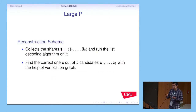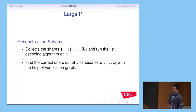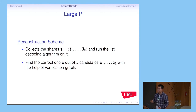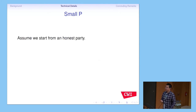There are two settings. First, assume there are many passive parties — P is very large. In this case, we can use the folded Reed-Solomon code to do reconstruction. However, this will output a list of candidates, not just one, but we can ensure the correct one is always in this list. Then, with the help of the verification graph, we can find the correct one out of all the candidates.